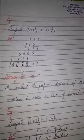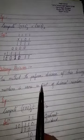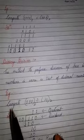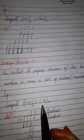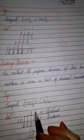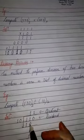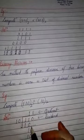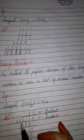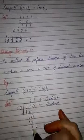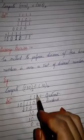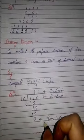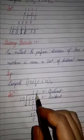Binary division. The method to perform division of two binary numbers is the same as that of decimal numbers. For example, 110 divided by 10: 10 into 1 gives 10, after subtraction we get 1 and bring down 0. Again, 10 into 1 is 10, so we get 0 remainder. This is the dividend and this is the remainder. So our answer is 11.